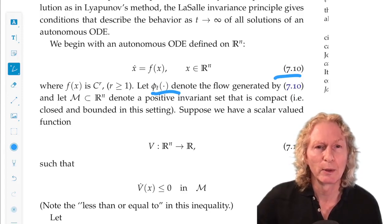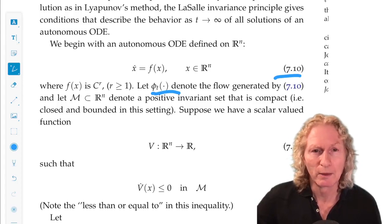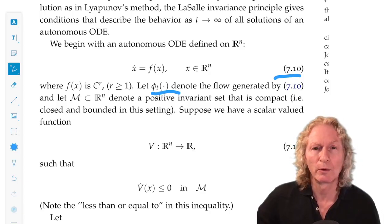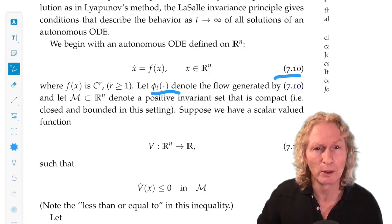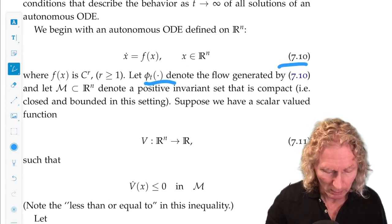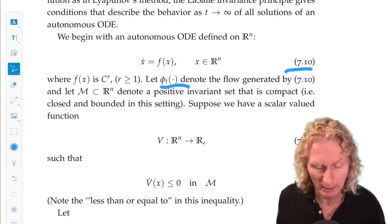In the Lyapunov method, we started with an equilibrium point, and the result was about stability of that equilibrium point. We don't have that here. We're not making such an assumption at the beginning.